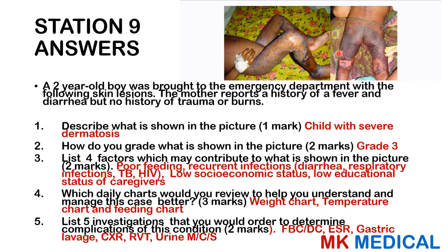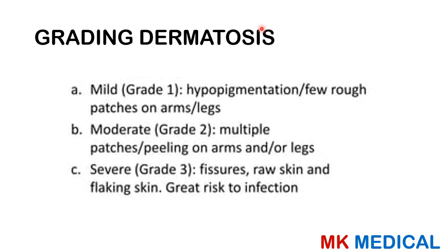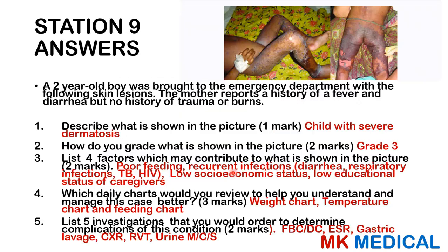This child has severe dermatosis — there is peeling of the skin, ulcerations, and exposed tissue. This is a grade three dermatosis. Grade one is hypopigmentation with a few rough patches on the arms and legs. Grade two is moderate — multiple patches and peeling. Grade three involves fissures, raw skin, and flaking, carrying a greater risk of infection. Contributing factors include low socioeconomic status, low educational level of caregivers, recurrent infections such as diarrhea, respiratory infections, TB, and HIV, and poor feeding. This can be confused with staphylococcal scalded skin syndrome, but the history makes that unlikely here.